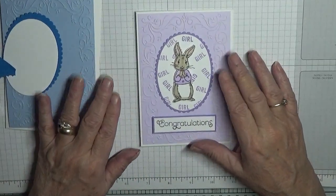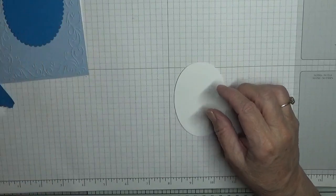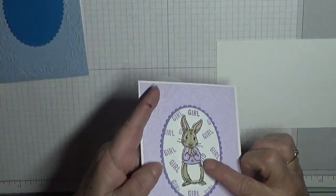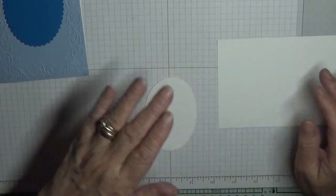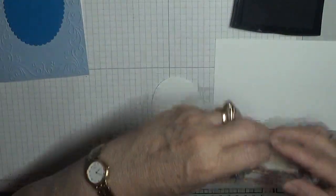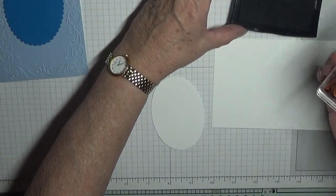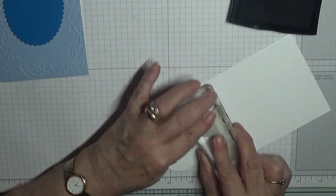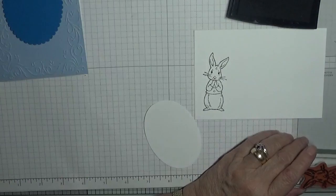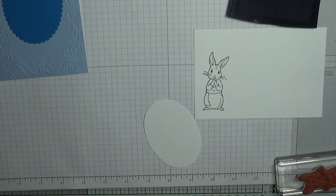To get started we will need this to stamp the word boy over it, and this to stamp the rabbit, and we're going to cut the rabbit out. I have got the rabbit on dimensionals. I've got my memento black ink, and we're just going to stamp the rabbit there like that. We'll cut him out when we've colored him in.